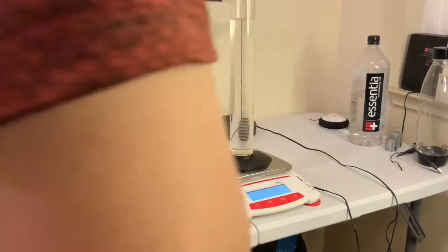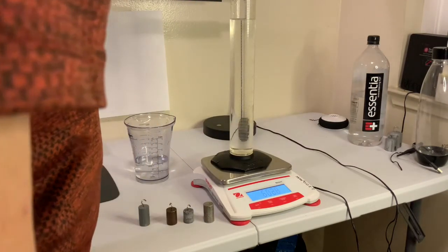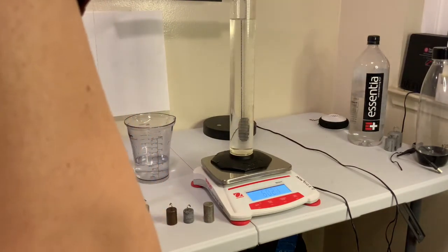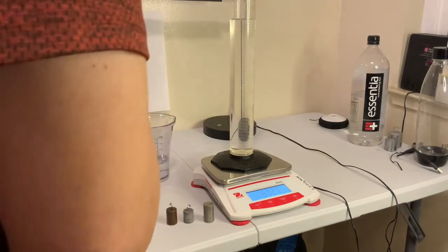Now as I pull this out, obviously the mass is going to be slightly different because there's moisture on the outside of the sample. So you'll have to subtract that off.